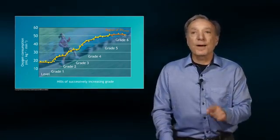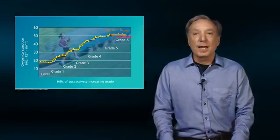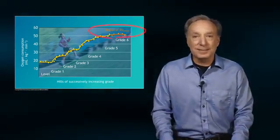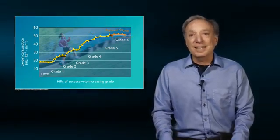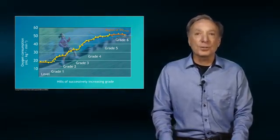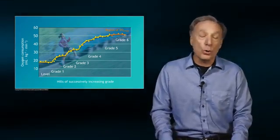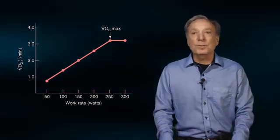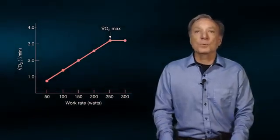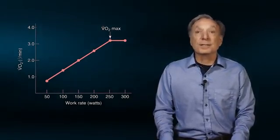Notice that in going from grade 5 to grade 6, oxygen consumption does not significantly increase despite the increased workload, indicating the individual has reached his or her maximal rate of oxygen consumption, or V̇O2 max. As shown here, V̇O2 increases linearly with increasing workload until V̇O2 max is achieved.